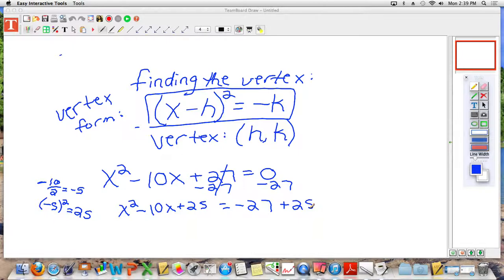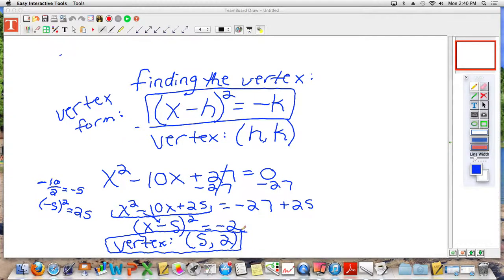Now the whole reason we did that was because these three terms make a perfect square. What perfect square do they make? So in parentheses, x, bring your minus sign down, half of 10 is 5, so it's x minus 5 squared equals, what is negative 27 plus 25? It is negative 2, which means then that the vertex is going to be the opposite of negative 5. What's the opposite of that? Positive 5. And then of course the opposite of negative 2, which is a positive 2. So our vertex in this case is positive 5 comma 2.